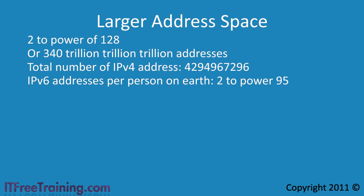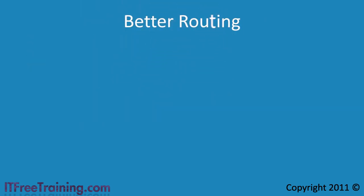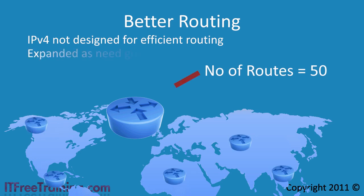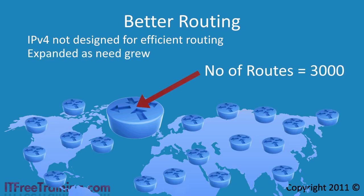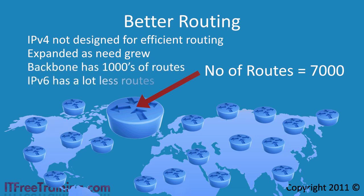With this many IP addresses available, you cannot imagine that you would ever run out. The larger IP address space also allows you to have better and more efficient routing. IP version 4 was not designed around efficient routing — it was expanded and allocated based on the need at the time. Because of this, internet backbone routers have thousands of routes on them. IP version 6 backbone routers in comparison have a smaller amount of routes.